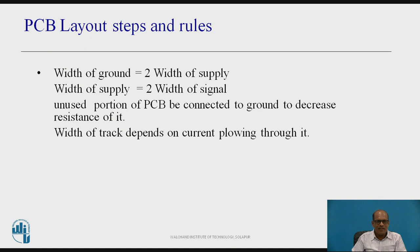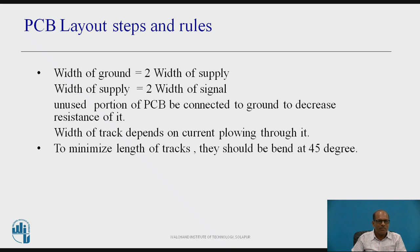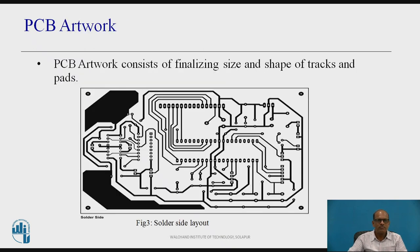Resistance of the track is given by rho L by A. To minimize the length of track, the track should be bent at an angle of 45 degrees. This figure shows a solder-side layout. On this layout, you can see the ground track — the width of ground is highest. The bending of tracks at 45 degrees is visible here. The unused portion of the PCB is connected to the ground.